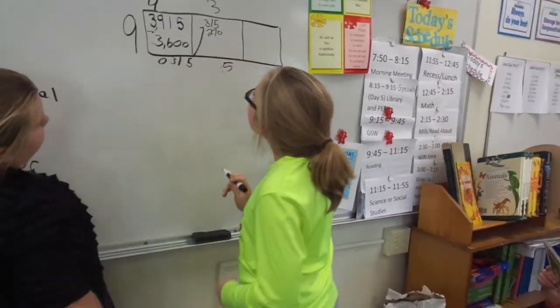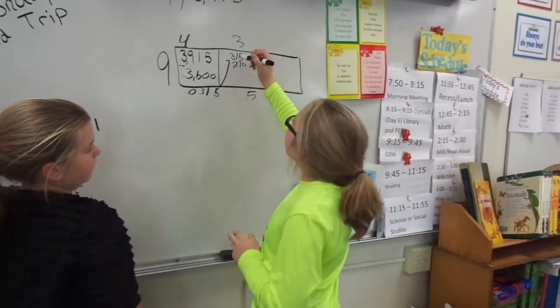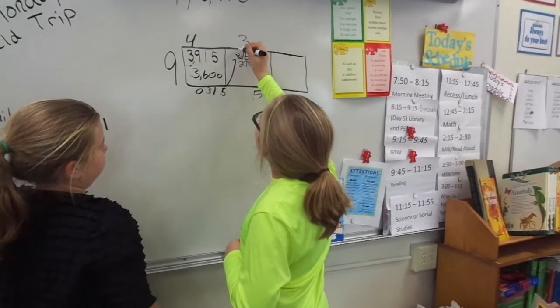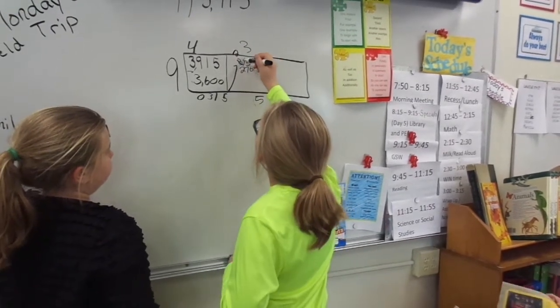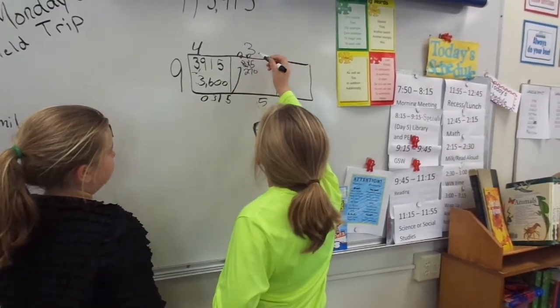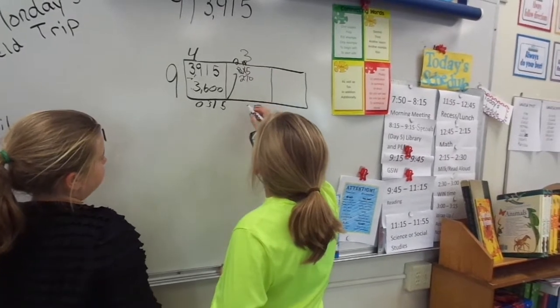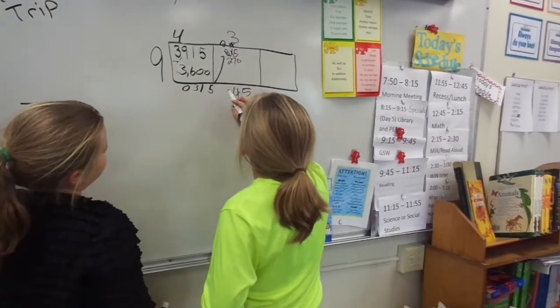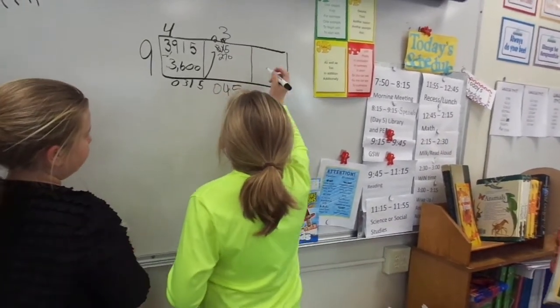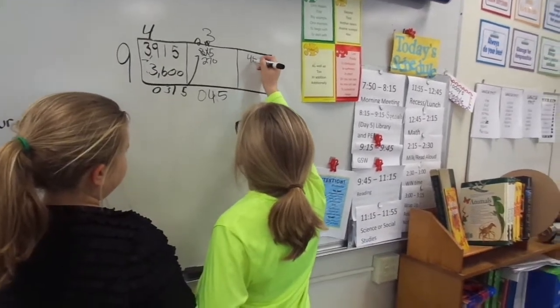Now since we can't do 1 minus 7, you're going to borrow from the 3 so that it turns into 2. This turns into 11. So 11 minus 7 is 4. Good. And 2 minus 2 is 0. And you carry the 45 up to here.